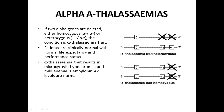If two alpha genes are deleted, it can be homozygous — both genes deleted from one allele — or heterozygous, with one gene deleted from each allele. This condition is called alpha thalassemia trait. Patients are clinically normal with normal life expectancy but show microcytic hypochromic mild anemia on blood tests, and on electrophoresis Hemoglobin A2 levels will be normal.